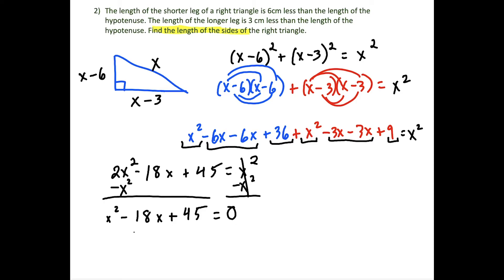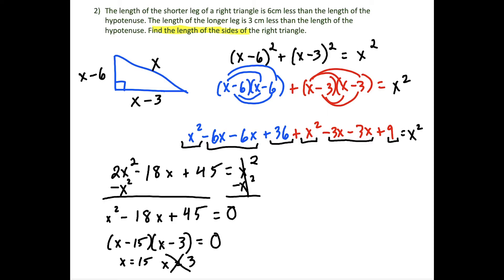We need two numbers with a sum of negative 18 and a product of 45: those are negative 15 and negative 3. This gives roots x equals 15 and x equals 3. We must reject x equals 3 because plugging it in would give a hypotenuse of 3, one side of 0, and one side of negative 3 — which makes no sense for a triangle.